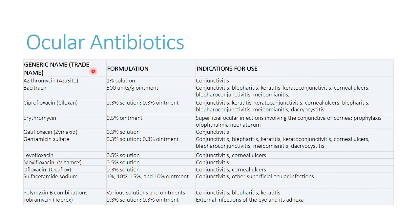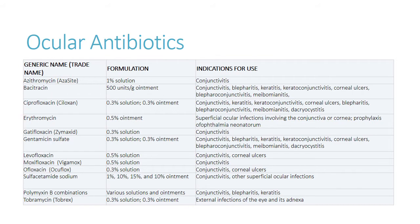Here are the antibiotics we have available. You don't have to remember the formulations specifically — just note that some are solutions and some are ointments, which will be important when deciding which to use. Most of the indications are pretty straightforward; you don't have to memorize the whole list. These are broad-spectrum antibiotics used to treat all types of conjunctivitis — familiar drugs like azithromycin, bacitracin, ciprofloxacin, and erythromycin.